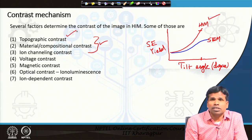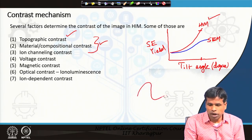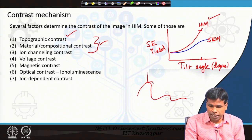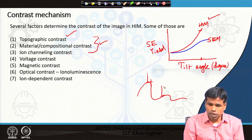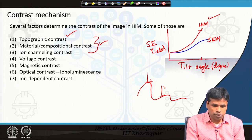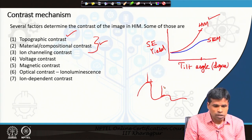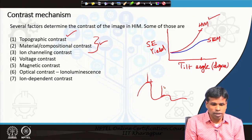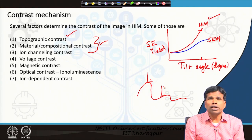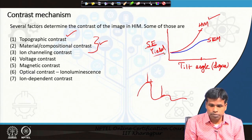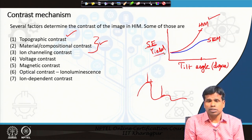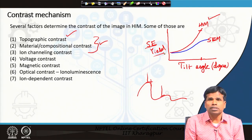Topographic contrast is relevant mostly for 3D specimens, which have surfaces at different tilt angles, resulting in different secondary electron yields. The second contrast is material composition contrast — materials with different atomic numbers produce different secondary electron yields, allowing one to distinguish two different kinds of materials present in a single image.